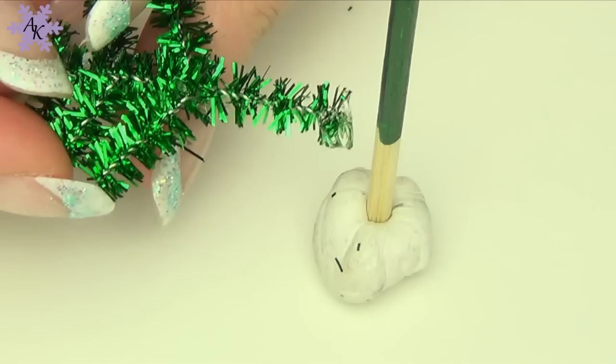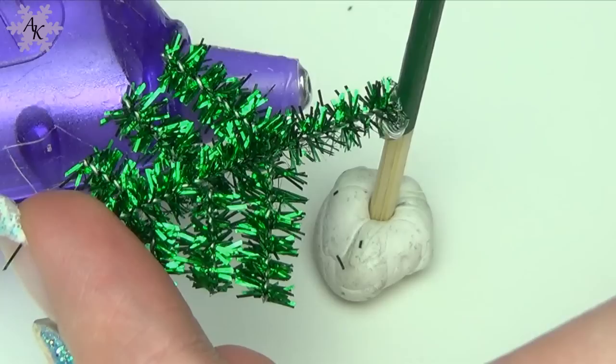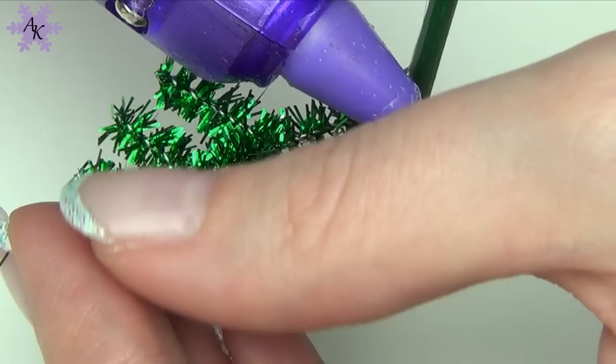When you've made all the bunches you need, start gluing them on the tree in rows. You'll have to hold them in place until the glue sets.